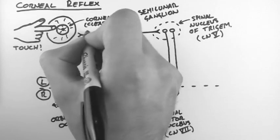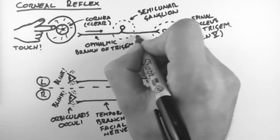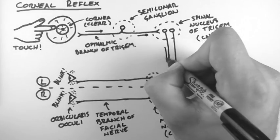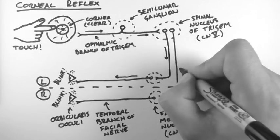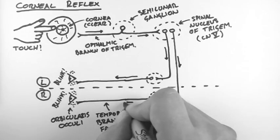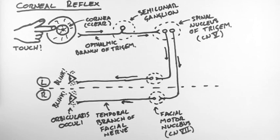Now this means that a touch to one eye sends a signal to both sides of the brainstem, which then send an efferent signal out to the eyes on each side, causing both eyes to blink. And that's an overview of the corneal reflex.